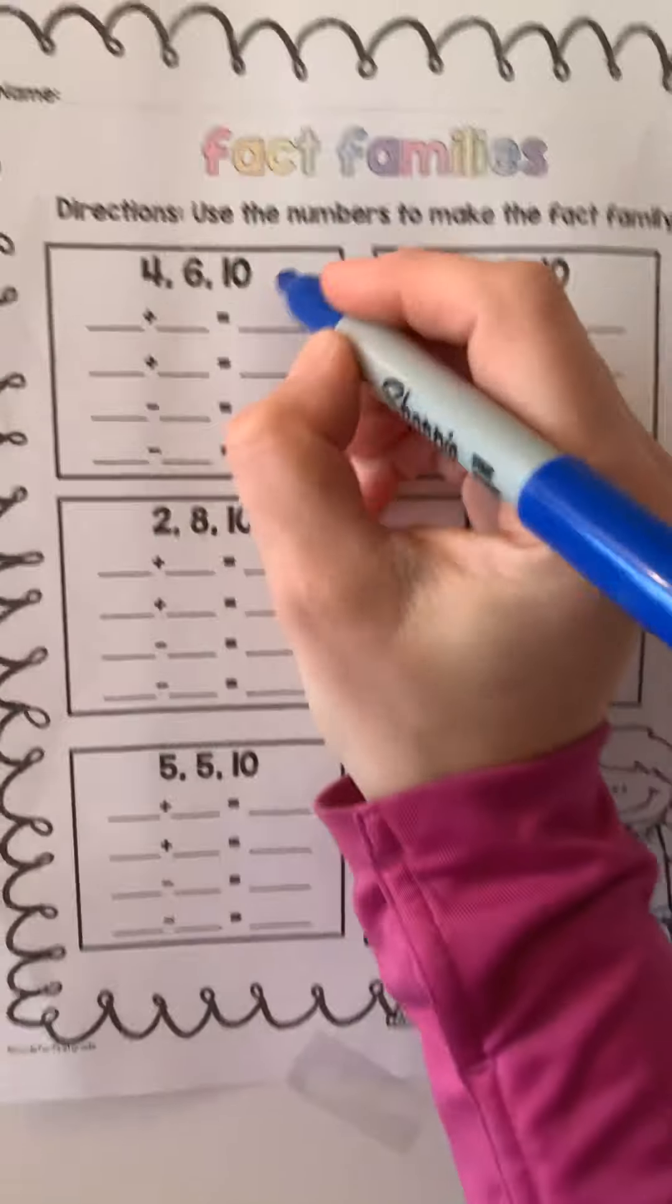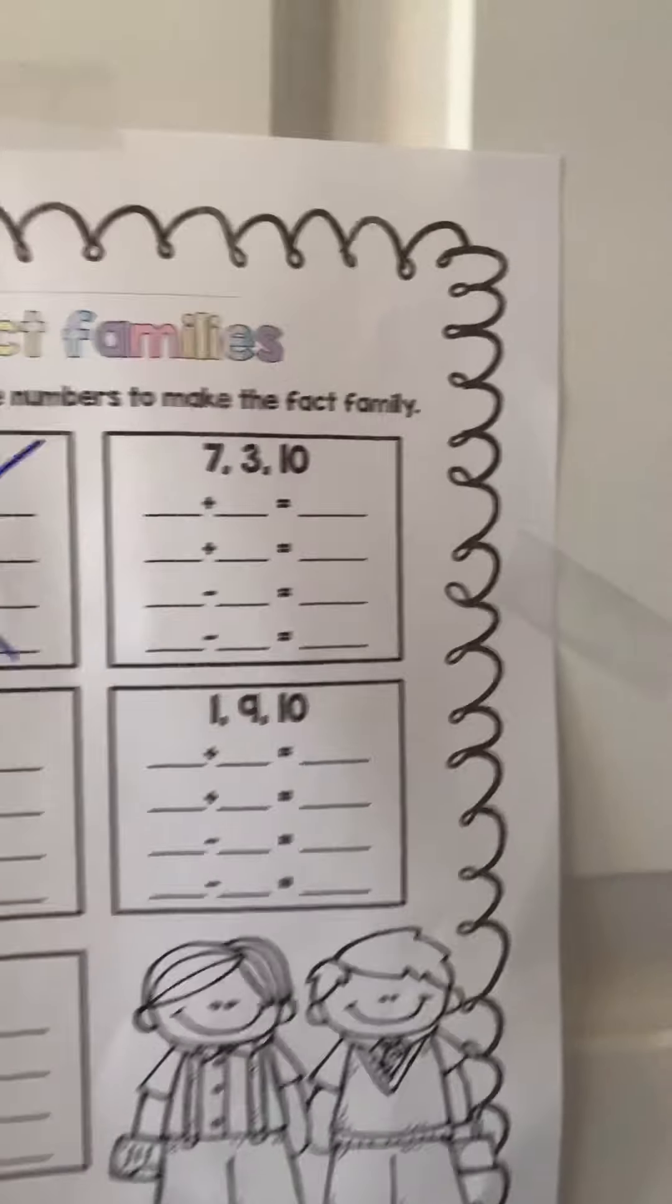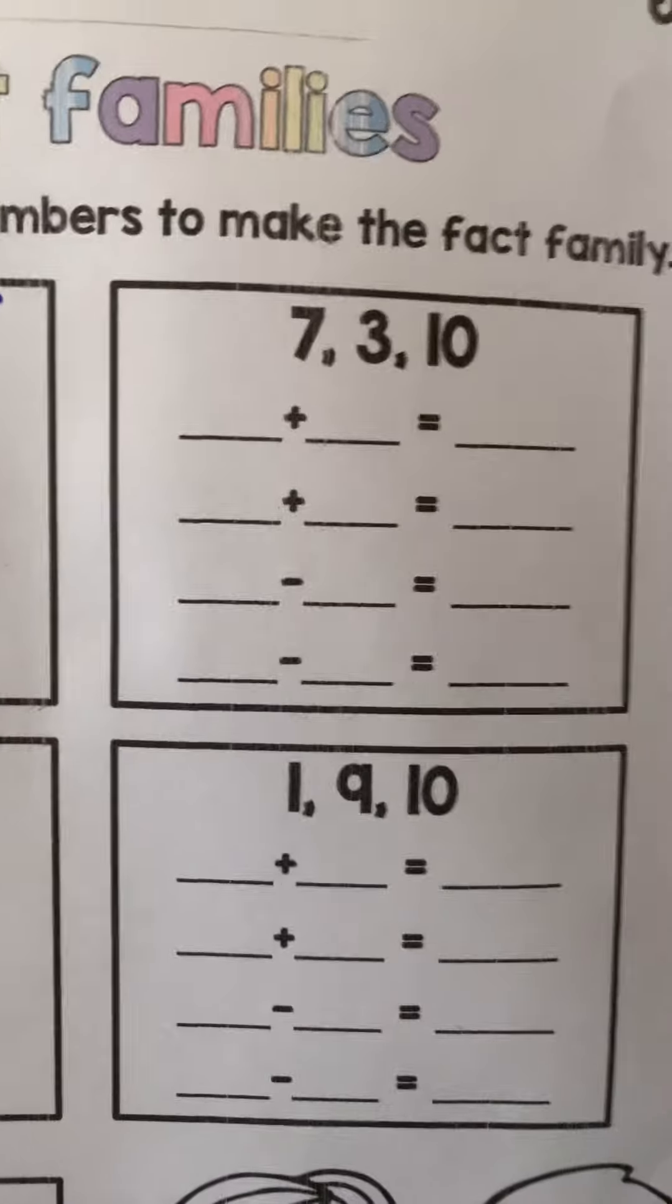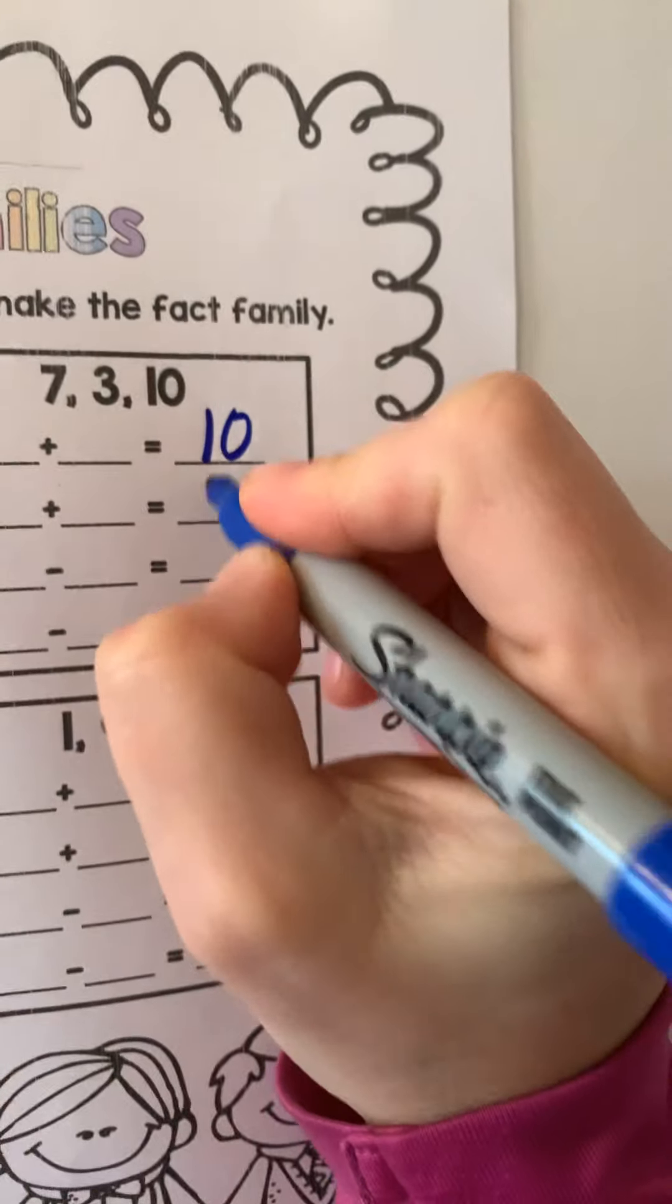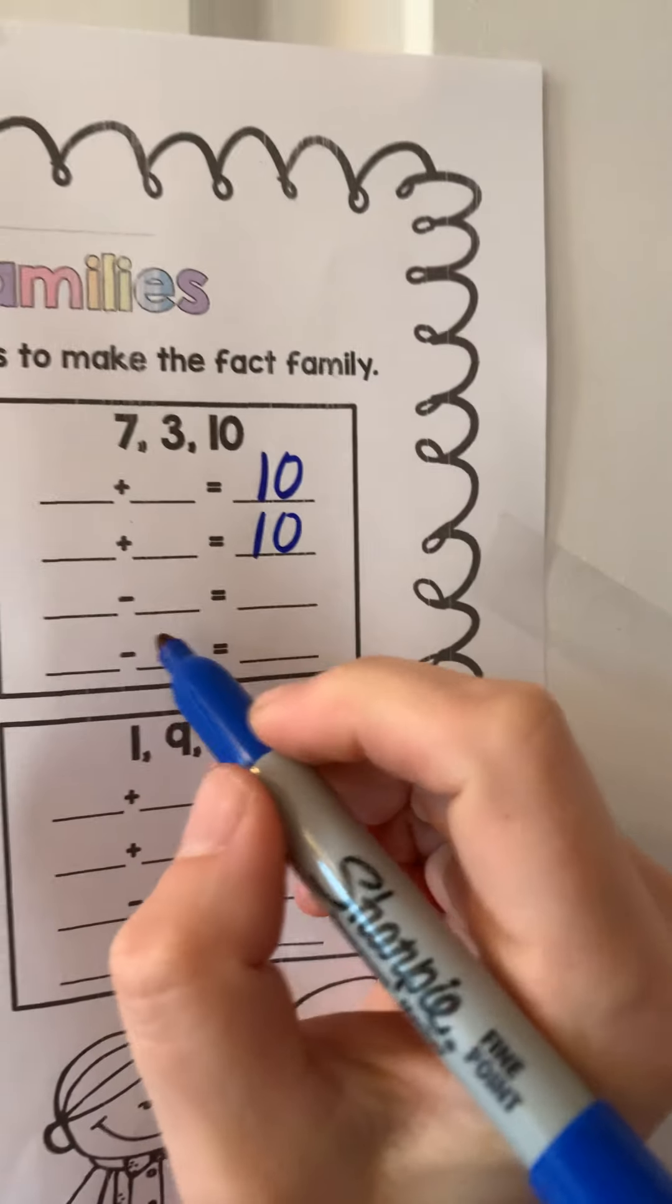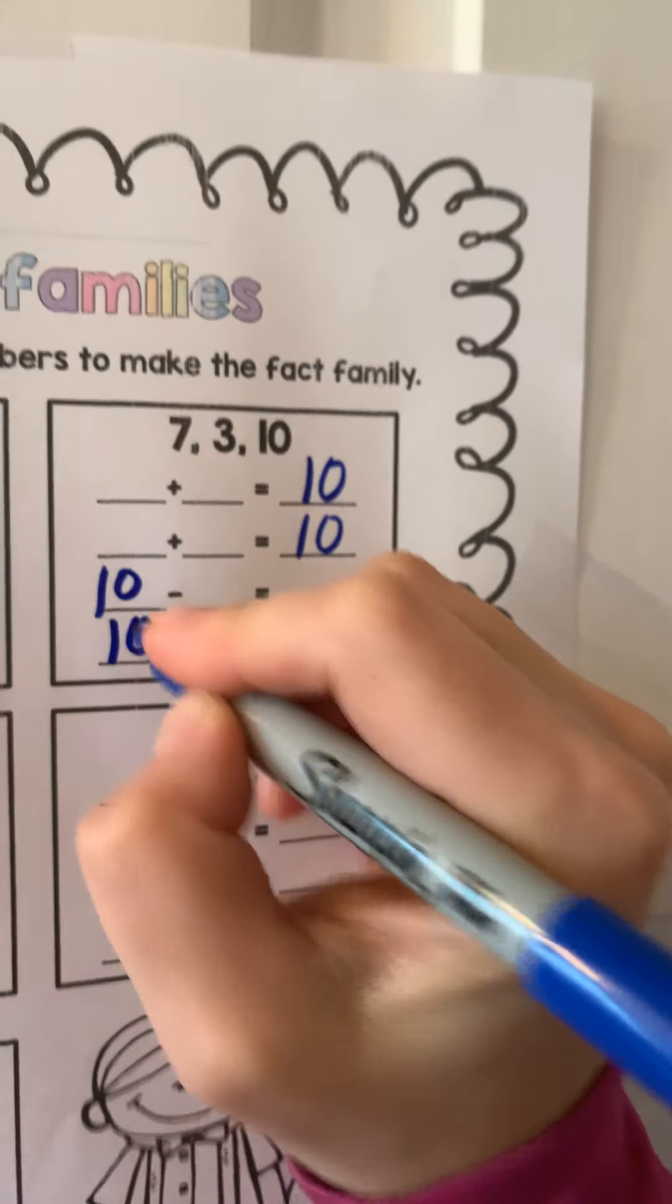Okay, so let's go practice. We just practiced this one together. So here we go. We have 7, 3, and 10. So addition ends with the biggest number, 10. And then subtraction starts with the biggest number, 10.